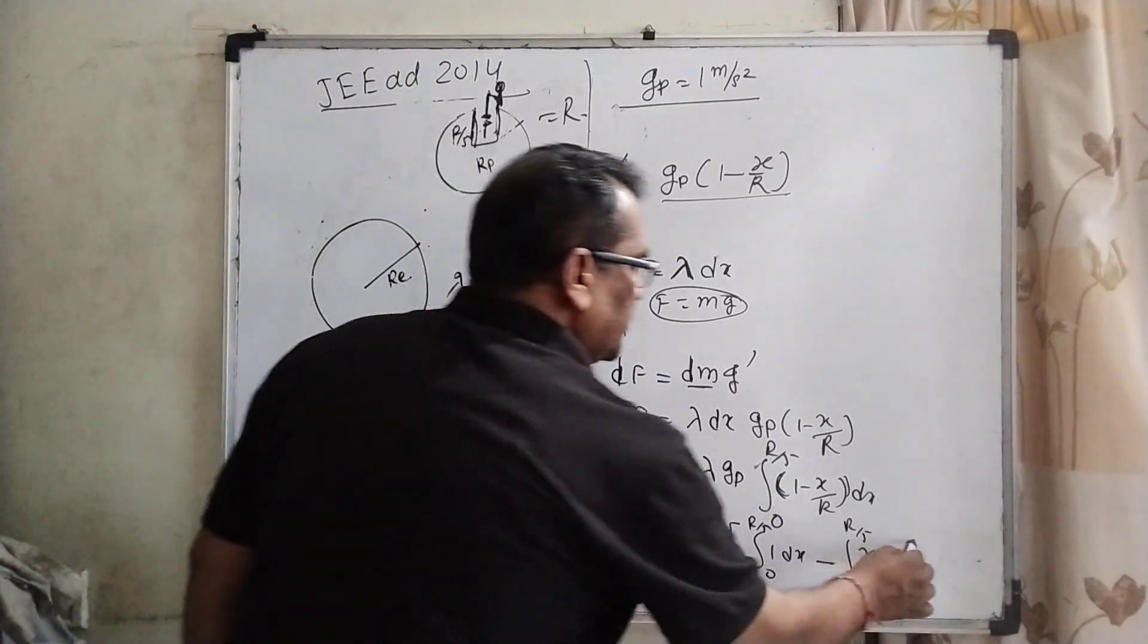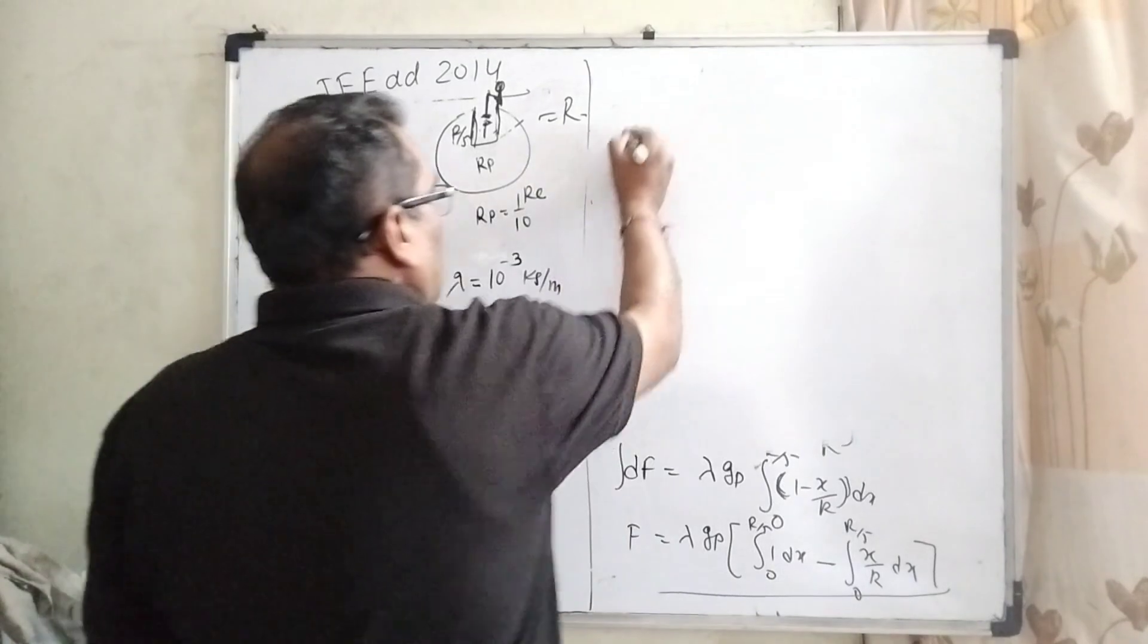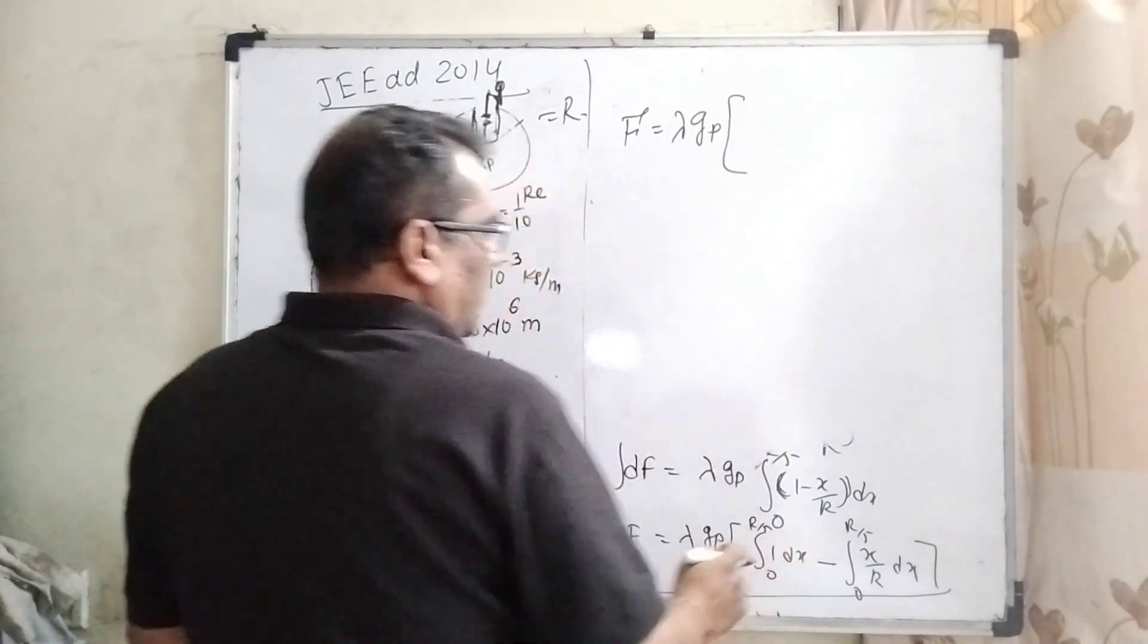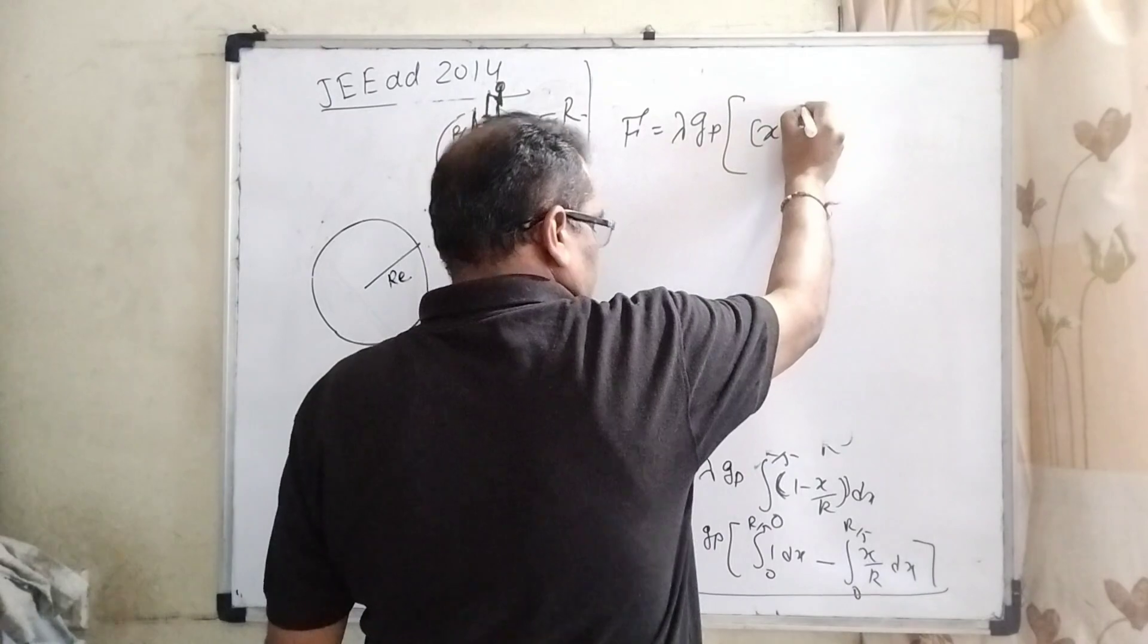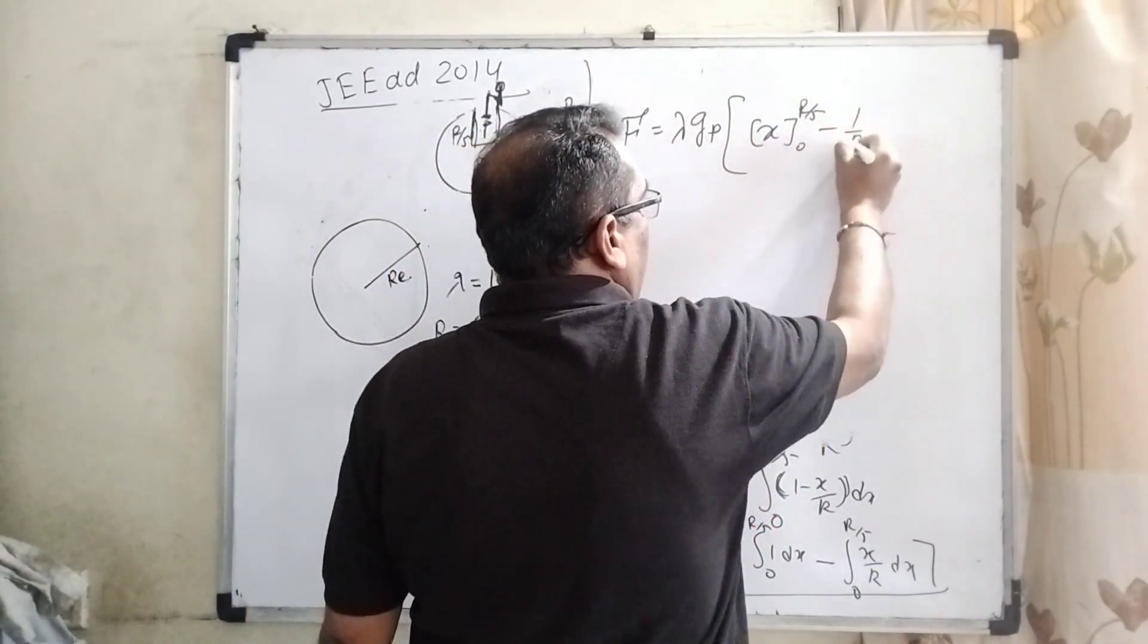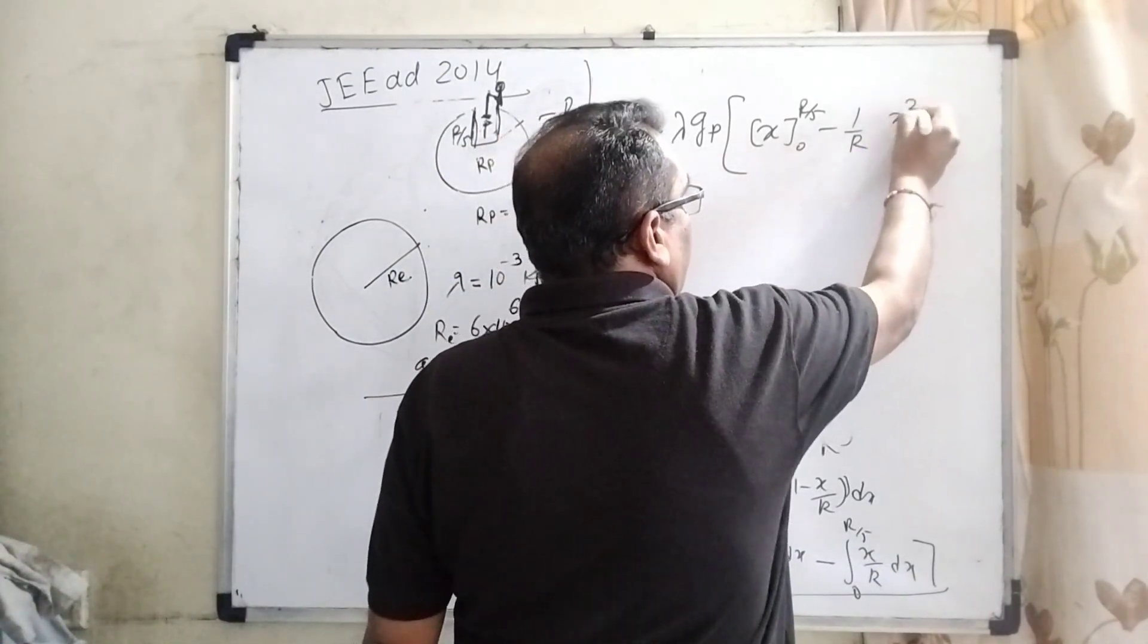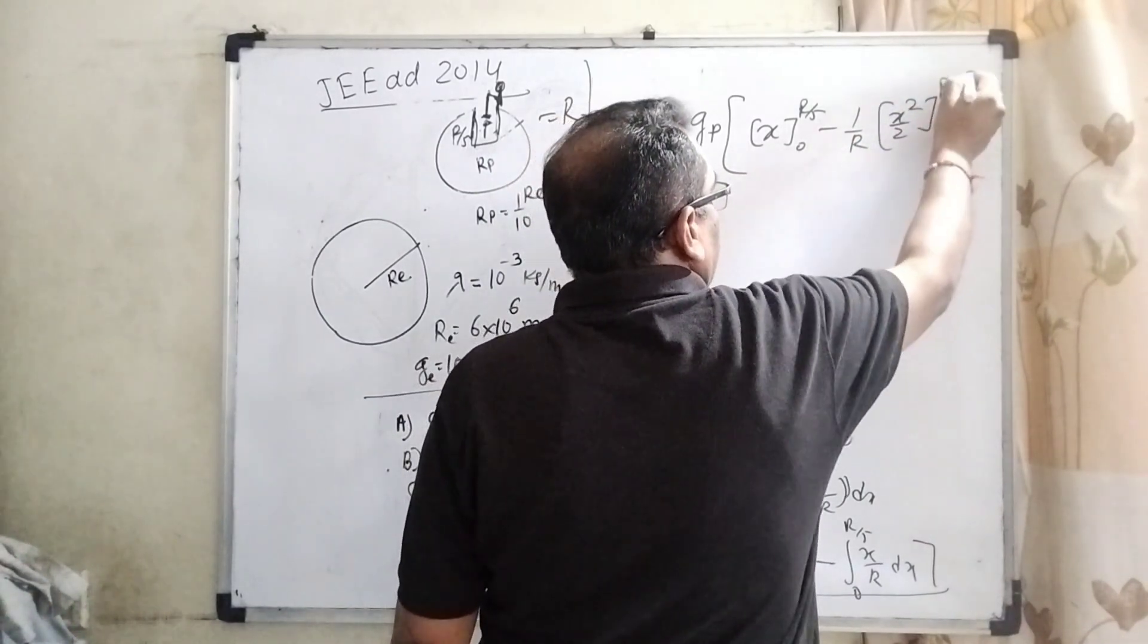Now, f equal to lambda gP and integration of dx can be written as x, upper limit R by 5, lower limit 0. Here 1 by R taken out, find the integration and here x square by 2, upper limit R by 5, 0.